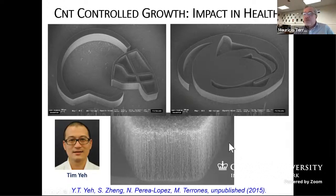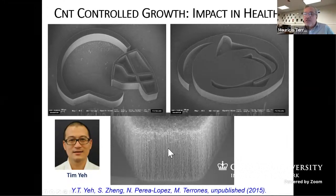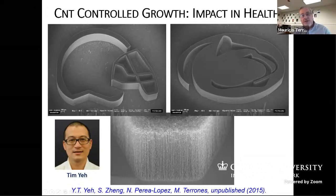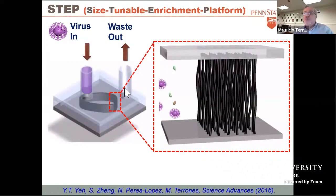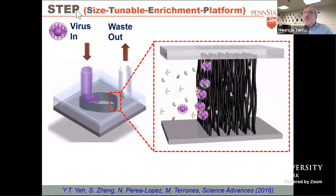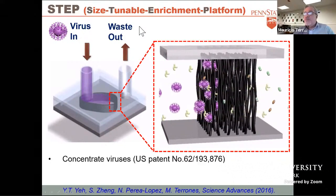We're using aligned carbon nanotubes and we can grow different arrays of them. We can control the intertubular distance of the tubes, so in principle we can trap viruses of different sizes, because viruses range in size and morphology depending on the type. The technology we're using to concentrate viruses is a size-tunable enrichment platform.